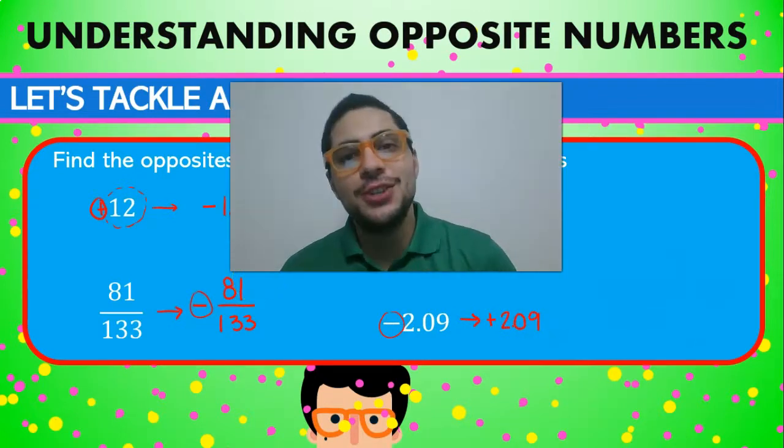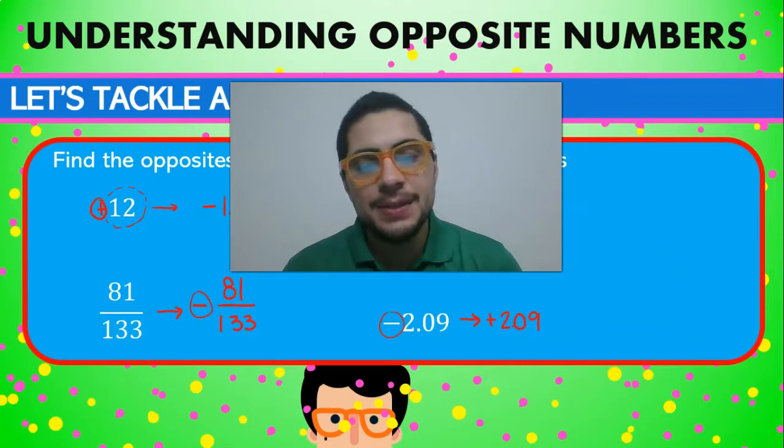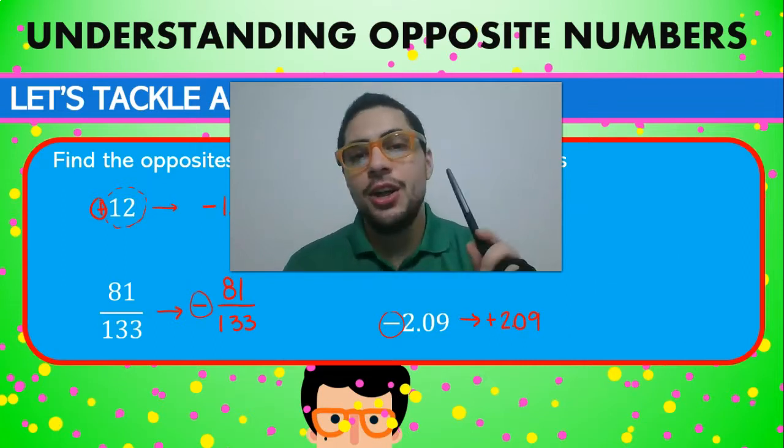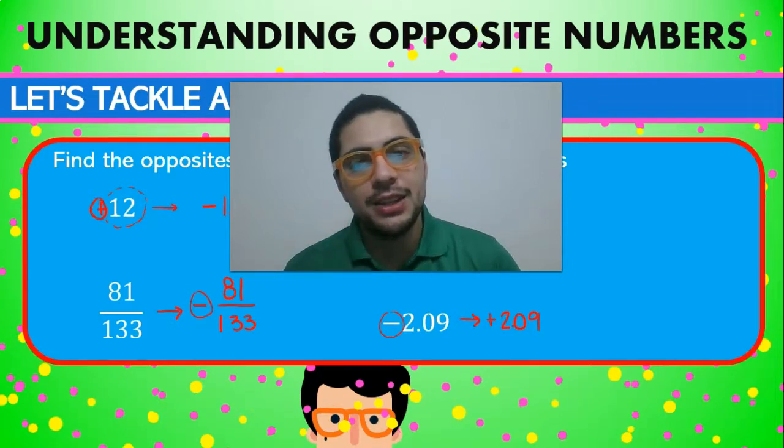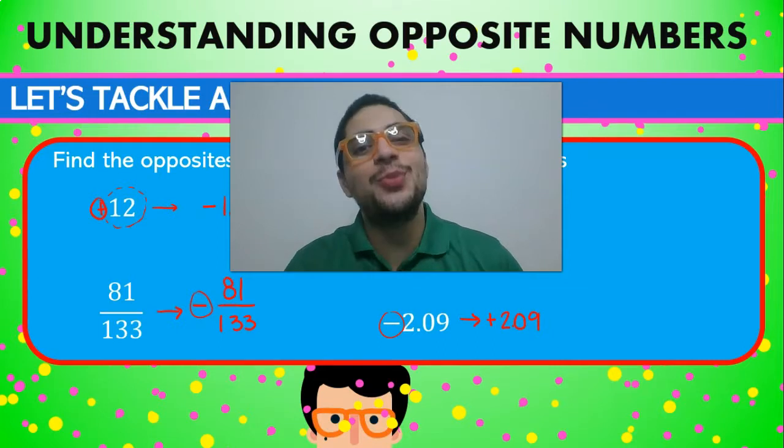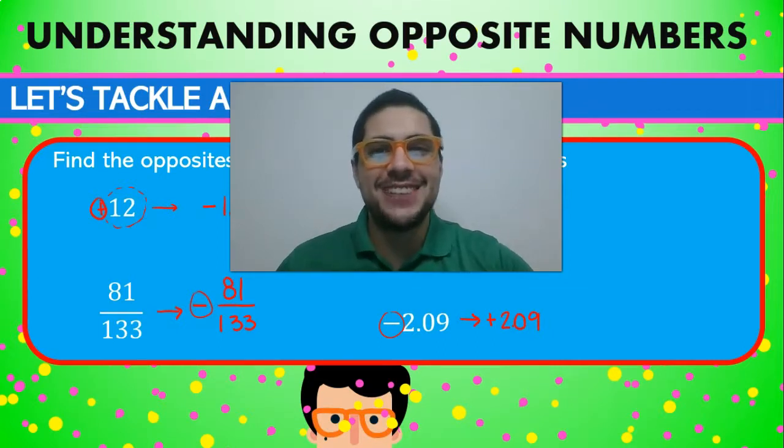So guys, just remember, understanding opposite numbers basically consists of knowing the definition, knowing the concept of absolute value, and understanding that it's the same number but with a different sign. So guys, I'll see you on the next one. Bye.